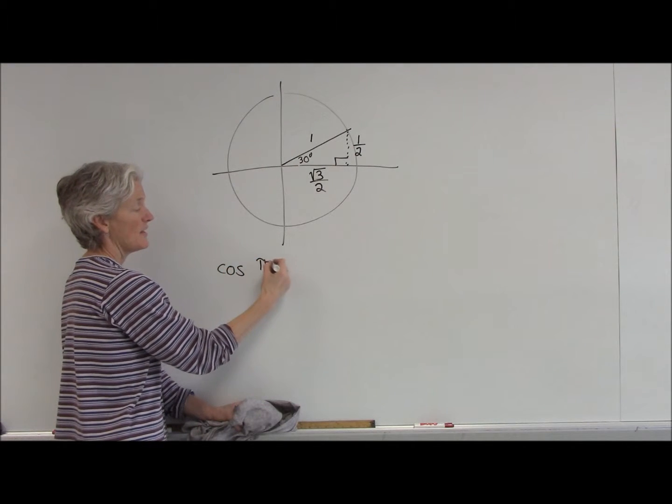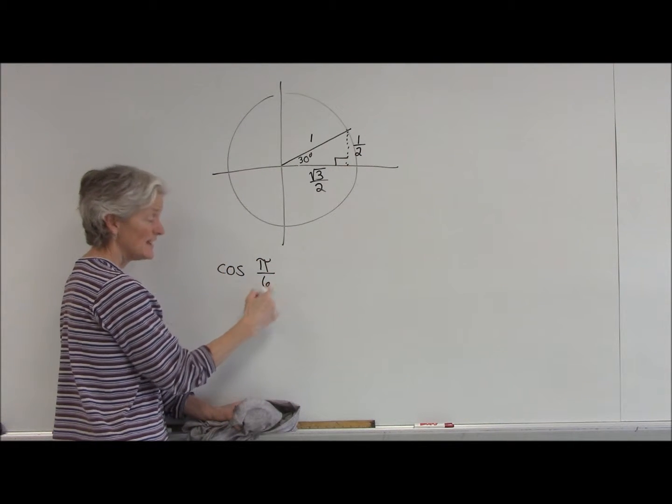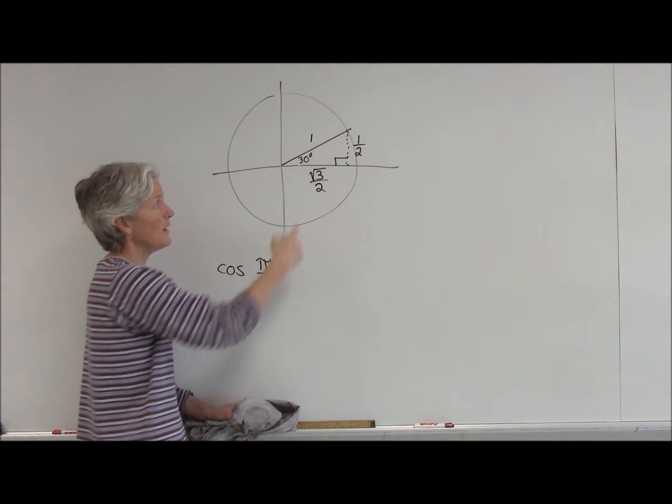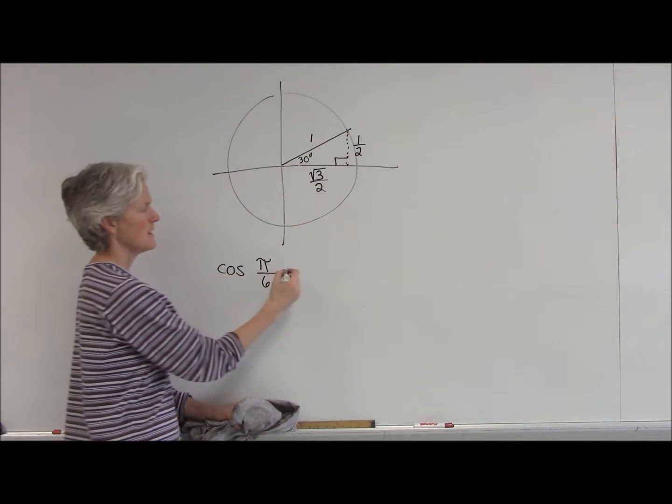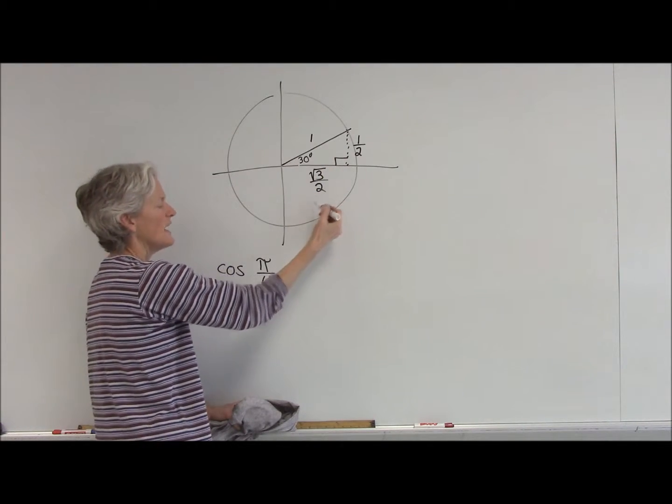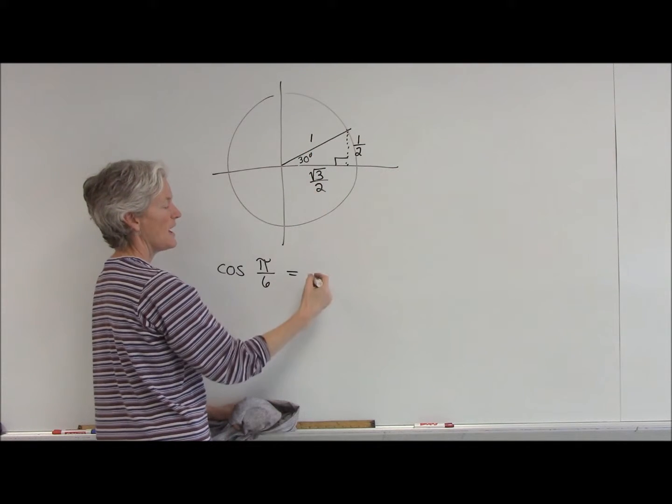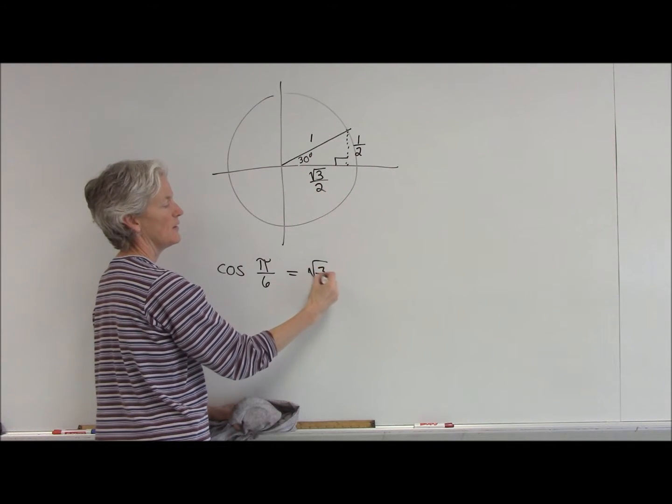So, if I want to find all of mine, I'm going to call that cosine of pi over 6. Pi over 6 is just radian language for 30 degrees. The cosine is my x value over the hypotenuse. So, that's the square root of 3 over 2.